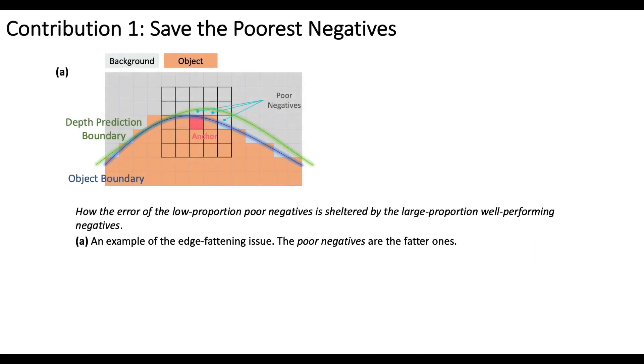However, naively encouraging the average D negative to increase leads to poor results. Here we give an example. The pixels lie in the gap between the two boundaries are the fatter ones.